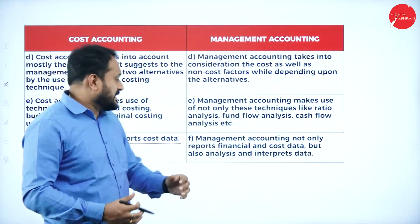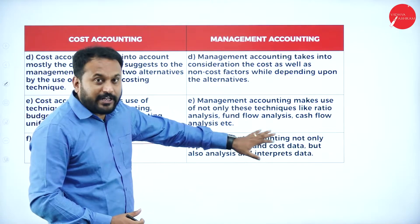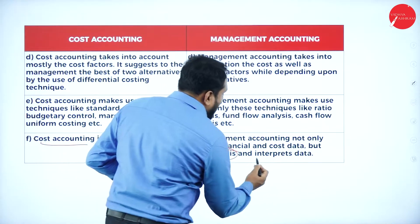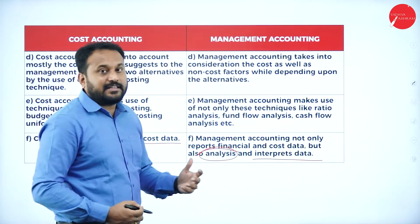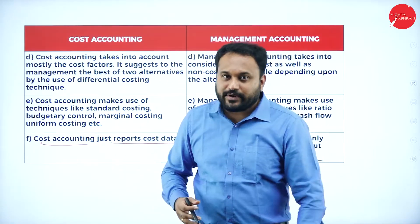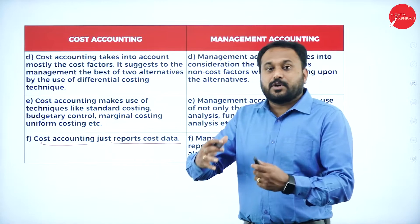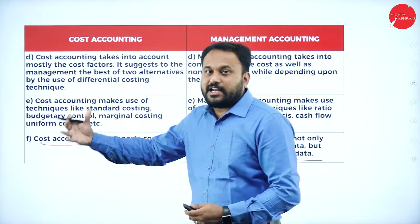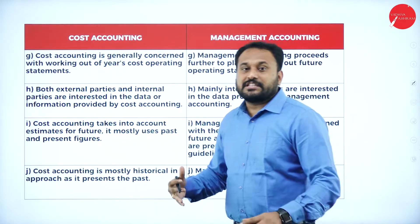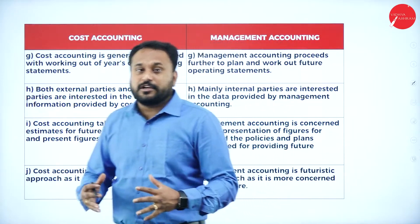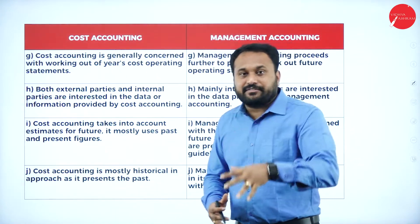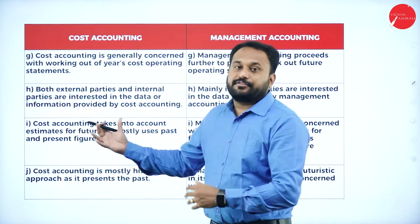Management accounting not only reports financial and cost data but also analyzes and interprets the data — it analyzes and interprets what exactly these accountancies are about. That is the key difference between cost and management accounting. With 5 marks for the meaning and definition and 10 marks for the differences, you get 15 marks clearly.